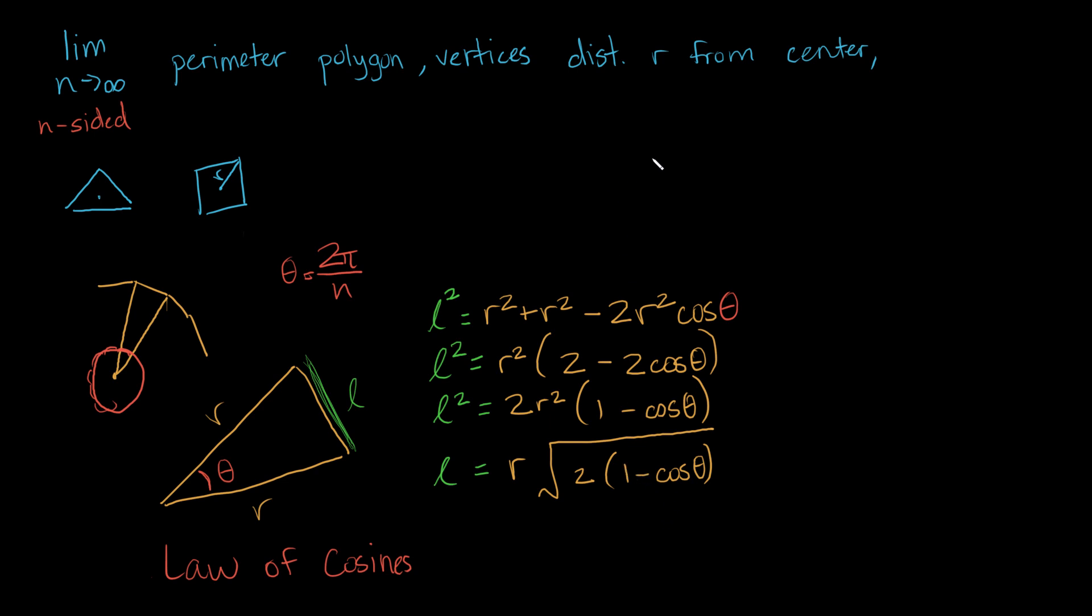Recall that the sine of some angle x is equal to the square root of 1 minus cosine of 2 times that angle x, all divided by 2. So what we want to get at is something similar to this. Notice we have 1 minus cosine theta already, we just need to divide it by 2. And in order to do that, we actually have to divide it by 4, because there's already a 2 here. So how can we get a 4 on the bottom? Well, let's divide the inside of the square root by 4 divided by 4.